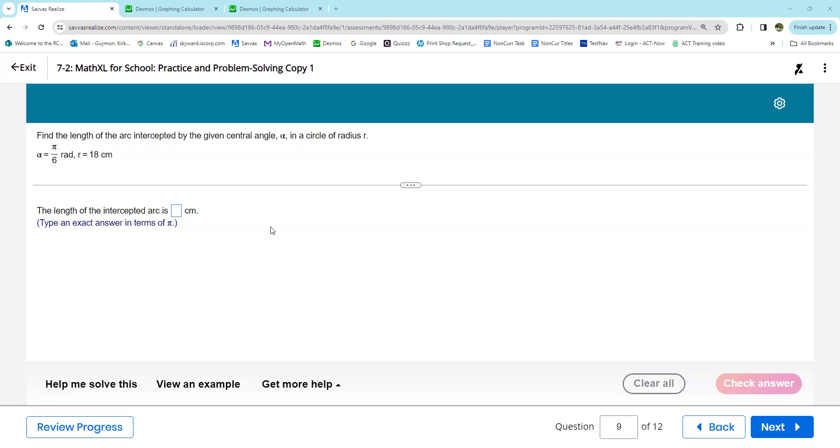And if you are having trouble with this one, I'm thinking you probably didn't watch the last video because it's the same problem. We are given an angle in radians, and then we're given a radius, and they want to know the length of the intercepted arc.